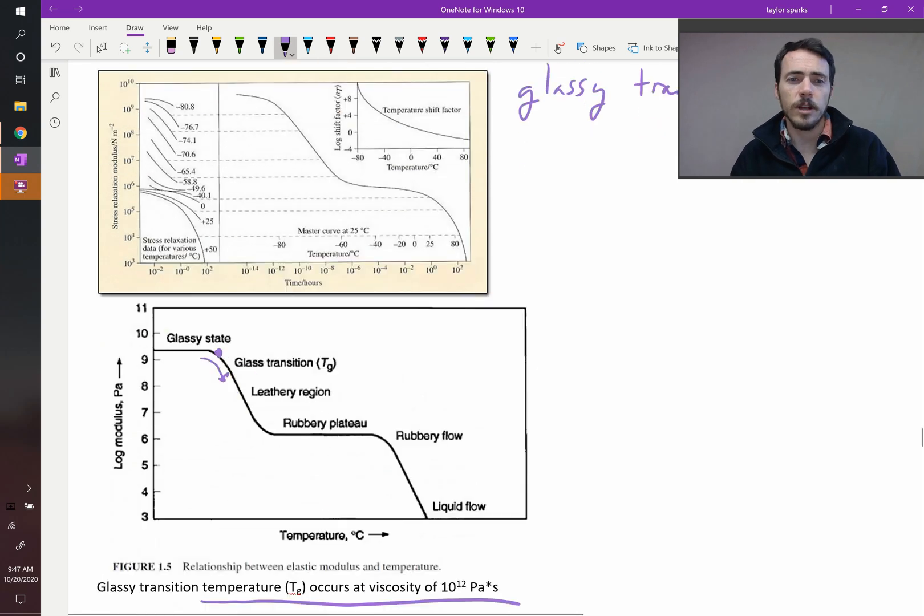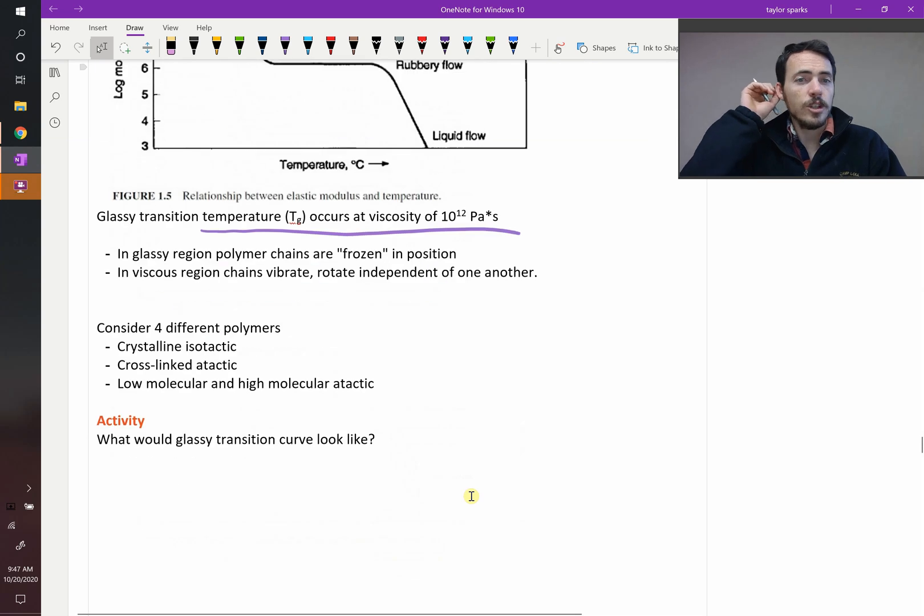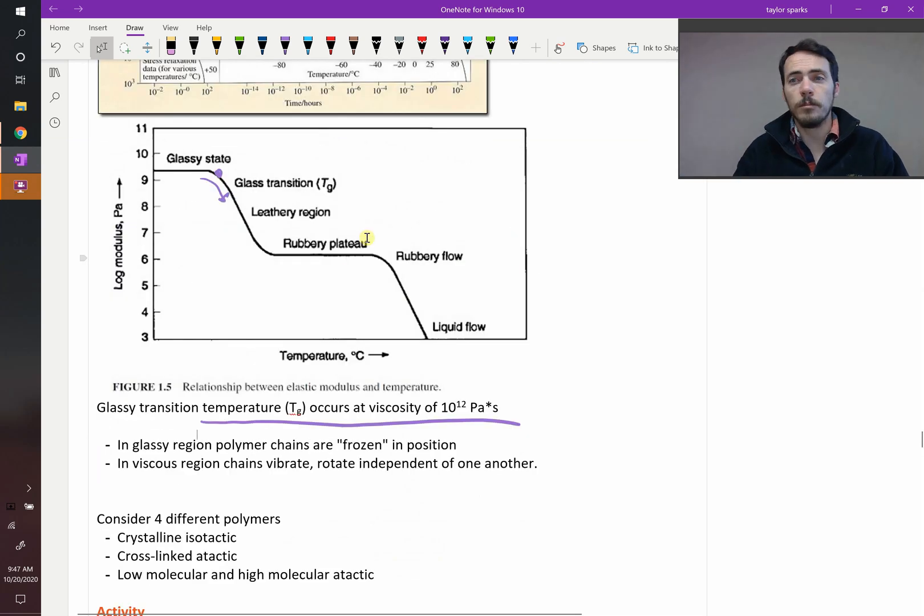But these sort of plots are really important for materials because many materials will exhibit this behavior. At low temperatures or high strain rates, they look like glasses. At high temperatures or low strain rates, they might look like a liquid that is actually flowing. Anyways, that's glassy transition temperature. You could draw these, by the way, for different polymers. Let's draw these for a couple different polymers.